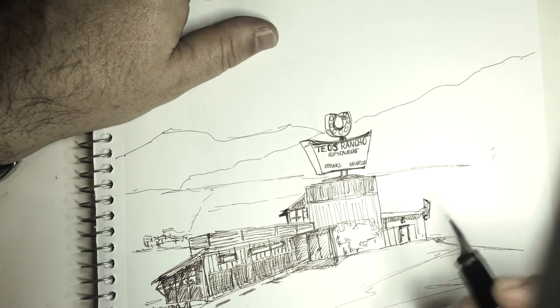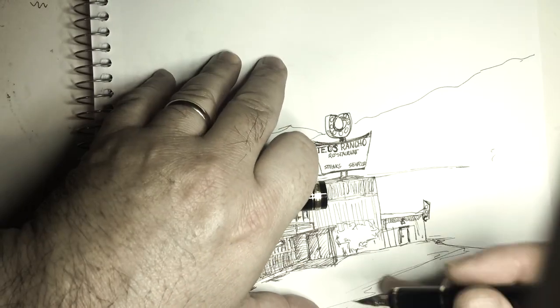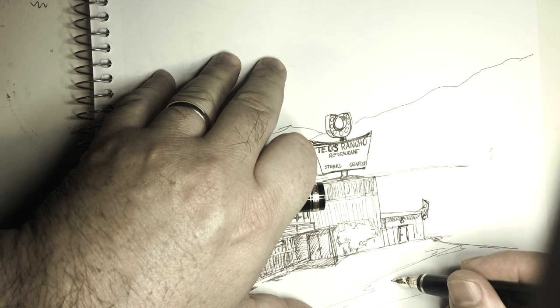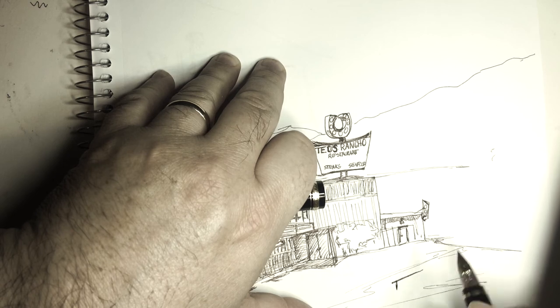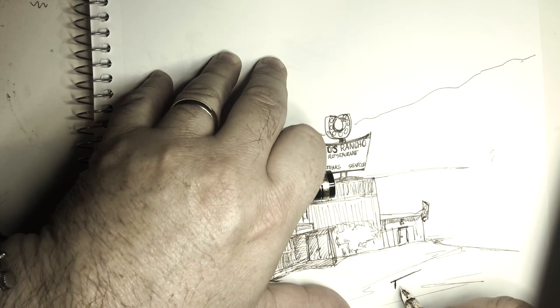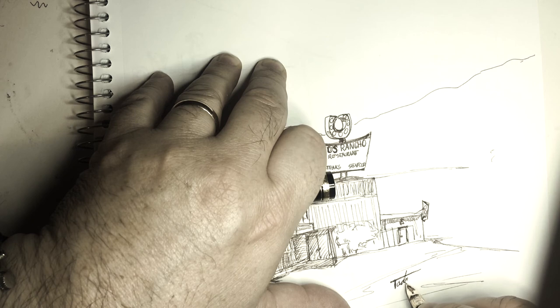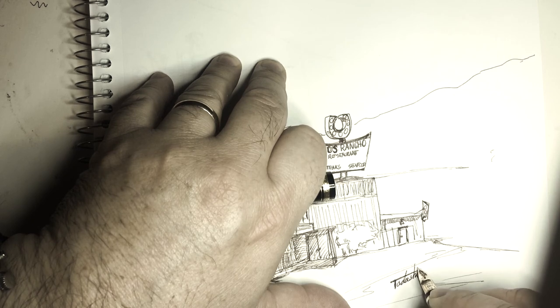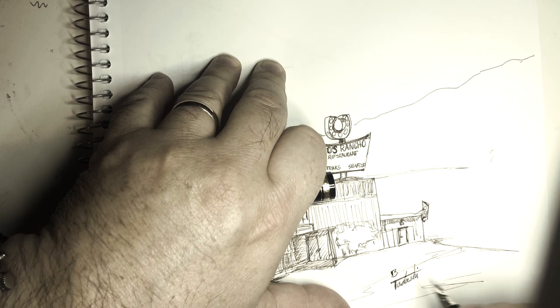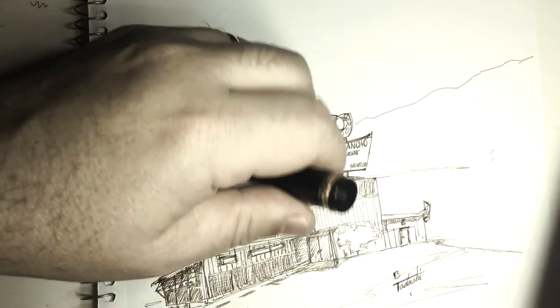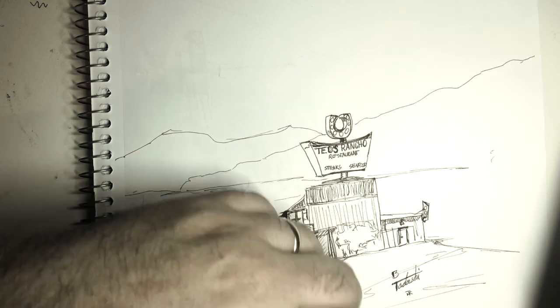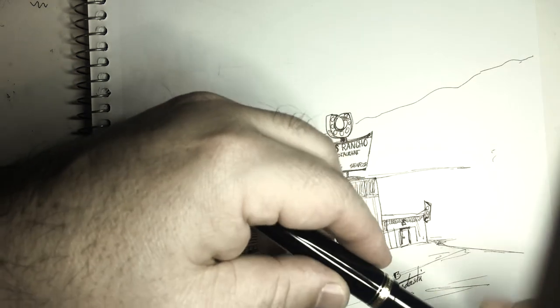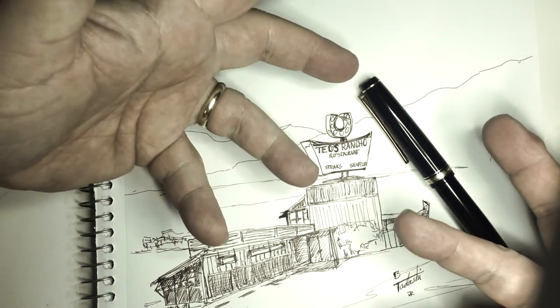One more thing before I go is just to put my name on this. Ted's Rancho, it's one of those things that you used to pass on the side of the highway. I remember the last time we went there, my dad had run out of gas and we had to pick him up. He had to walk back to the phone and use the phone at Ted's Rancho. We had to drive all the way from North Malibu all the way back to come pick him up. Thank you.